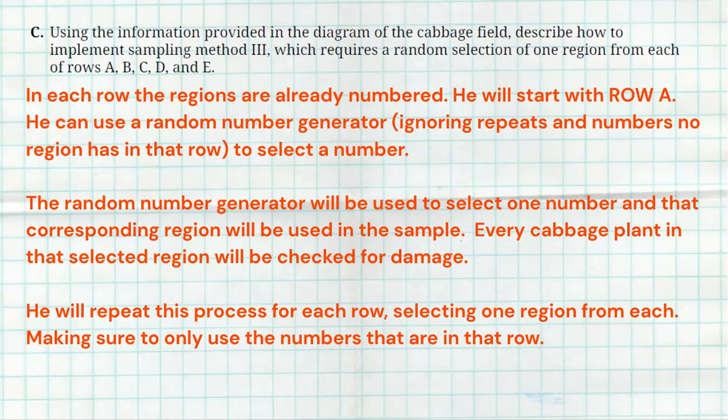He will repeat this process for row B, C, D, and E. So again, when he goes to row B, he's only going to be using 6, 7, 8, 9, and 10, and so forth for the other rows. He's got to make sure that any other numbers that get picked that aren't in that region are just not going to be picked, or they're just going to be ignored using his random number generator.